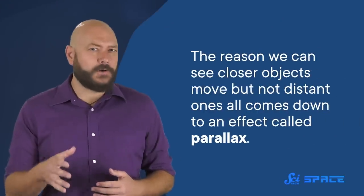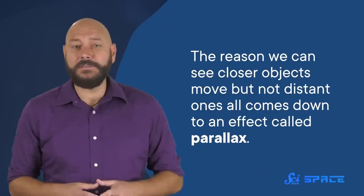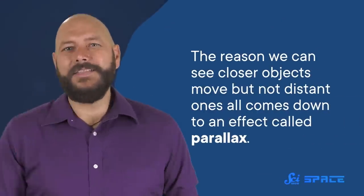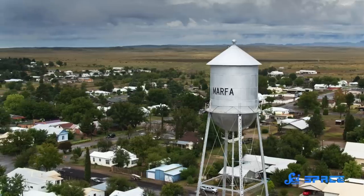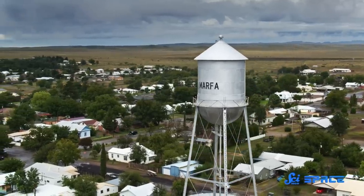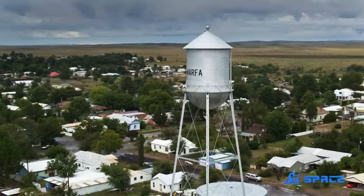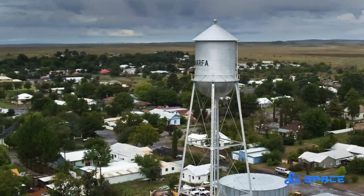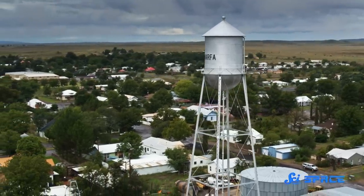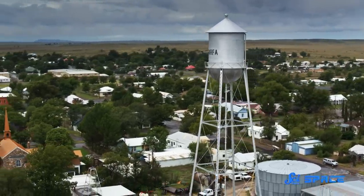The reason we can see closer objects move but not distant ones all comes down to an effect called parallax. This is what happens any time you see an object in the foreground change position against the background as you view it from different spots. Imagine you're on a road trip and spot a water tower against some distant mountains. You drive a couple kilometers and look again.